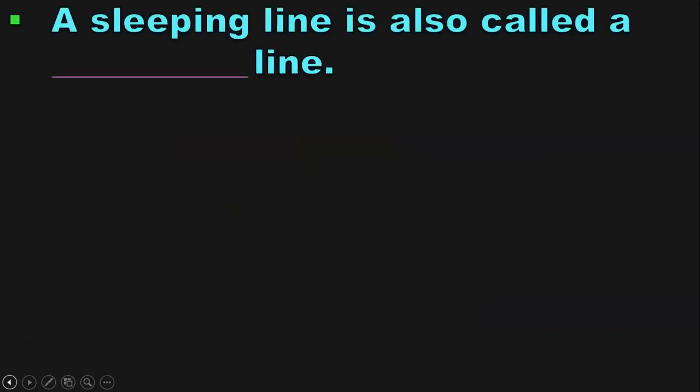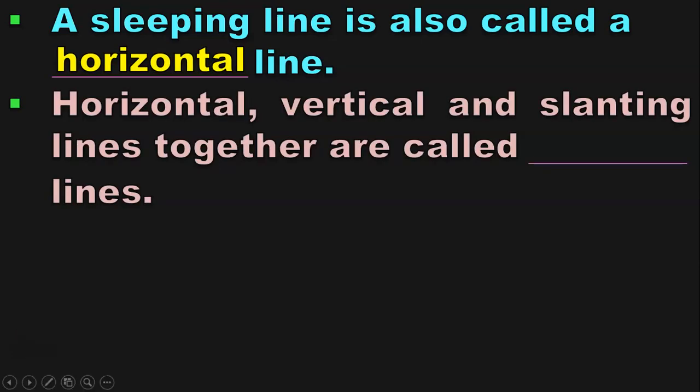A sleeping line is also called a horizontal line. Horizontal, vertical and slanting lines together are called straight lines.